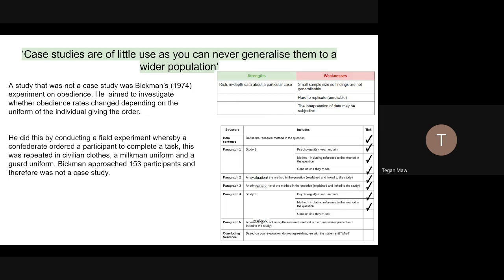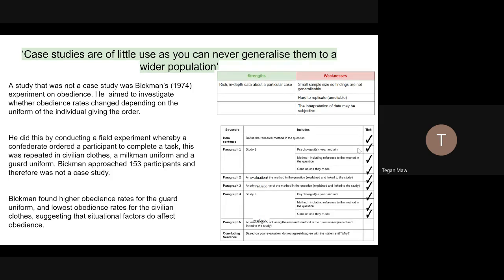The final part then for the AO1 marks is any conclusions made. So Bickman found high obedience rates for the guard uniform and lowest obedience rates for civilian uniform clothes, suggesting that situational factors do affect obedience. So again, we've shown that we know what happens in that study. We've hit all of our AO1 marks now.